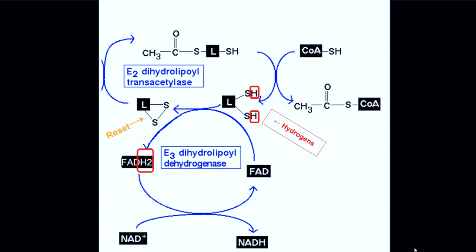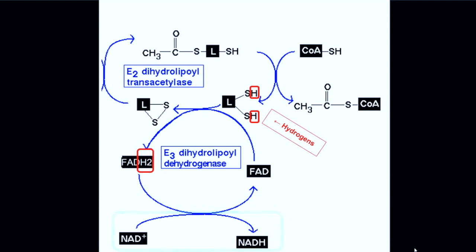Now the lipoamide arm has hydrogens that will need to be removed before the cycle can run again. The lipoamide arm is essentially reset when the hydrogens are transferred to an FAD molecule, making FADH2. Then hydrogens from the FADH2 molecule are transferred within the E3 subunit to an NAD+, forming NADH. This resets the FAD molecule and releases NADH as a byproduct.